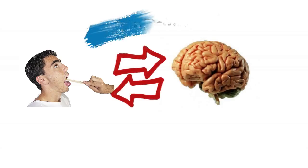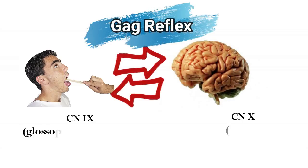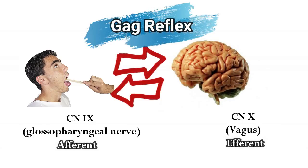Finally, the gag reflex is sensed by cranial nerve number nine, the glossopharyngeal, and that sends the afferent to the brain. The efferent coming back will be the vagus nerve, which causes the gag reflex.